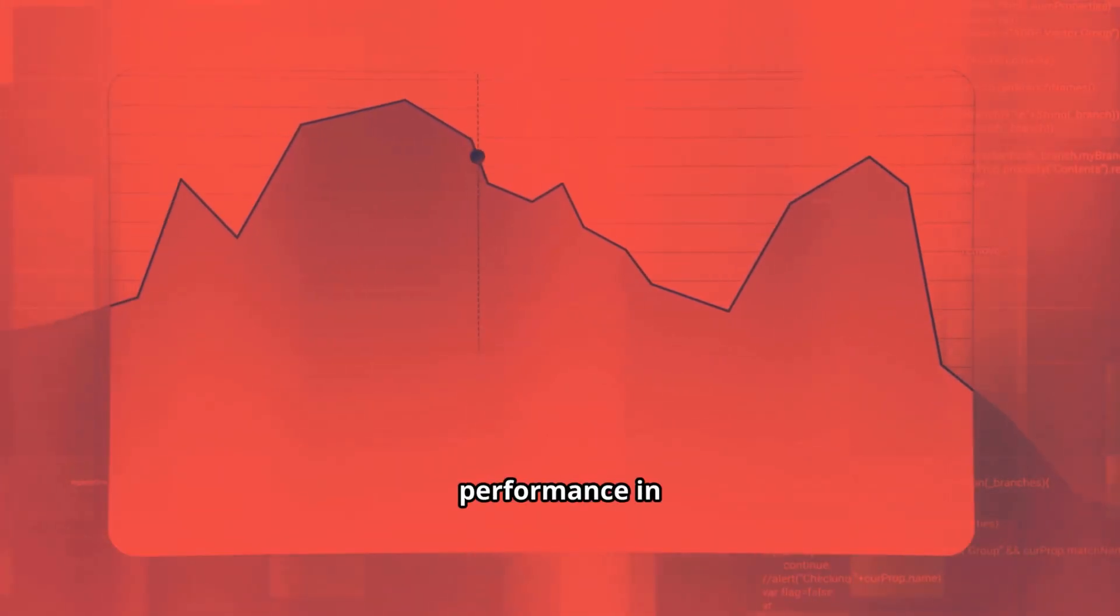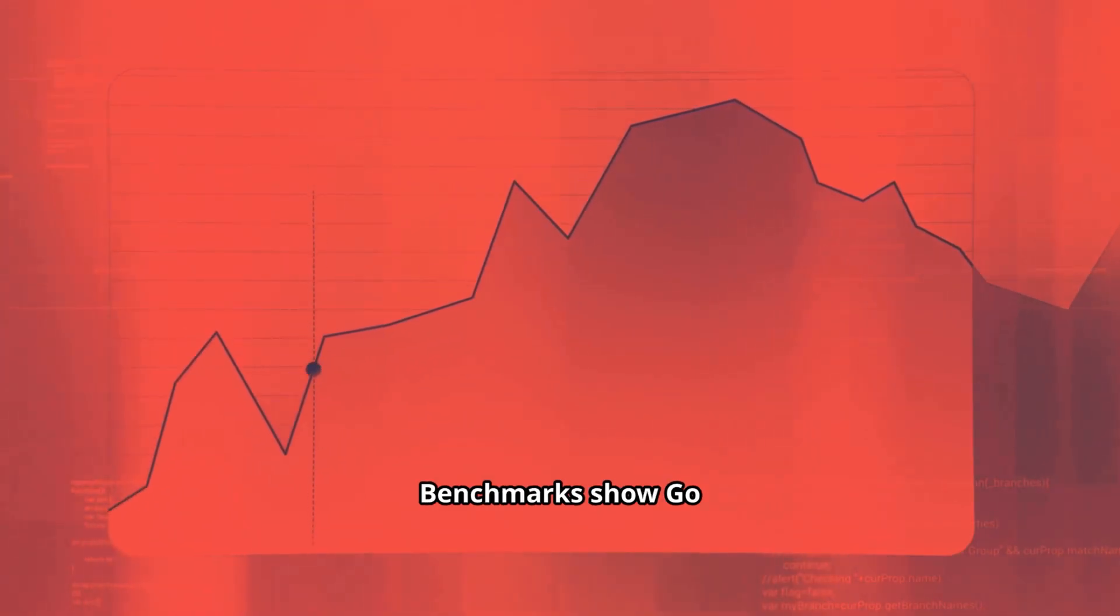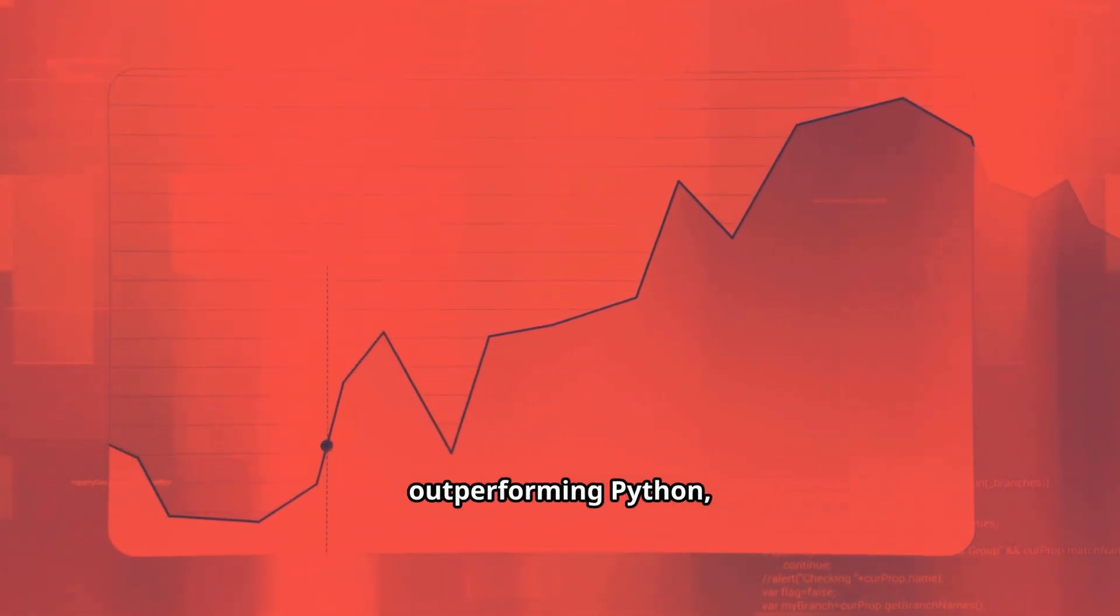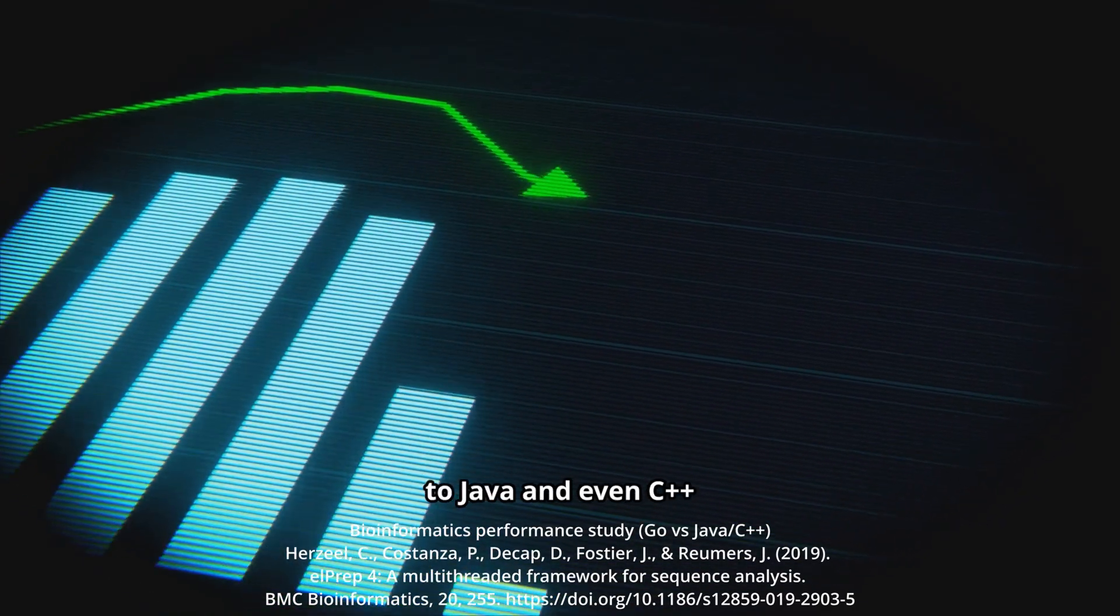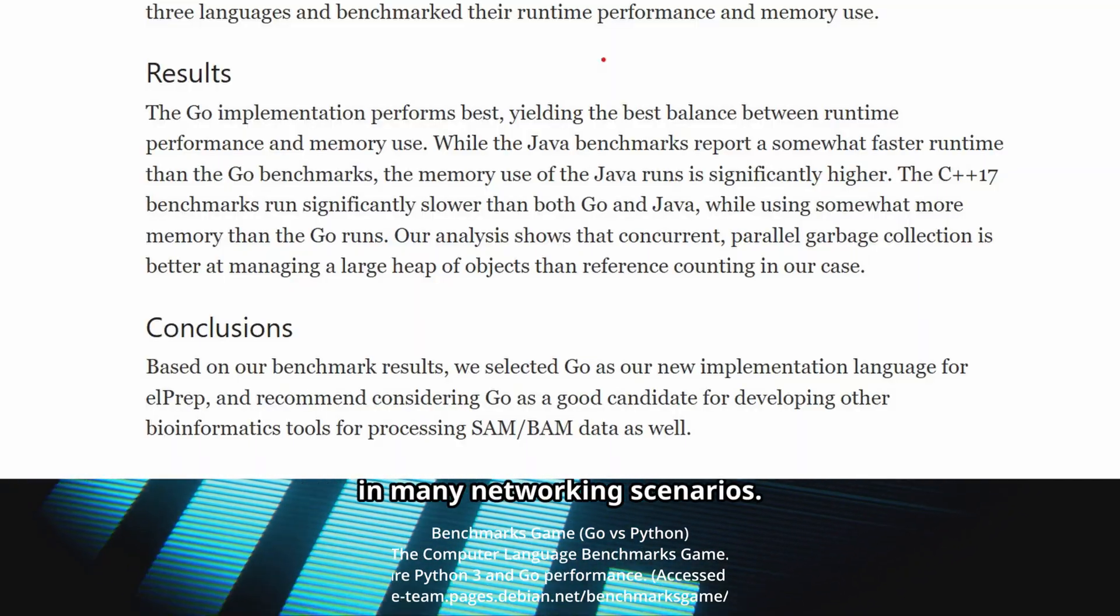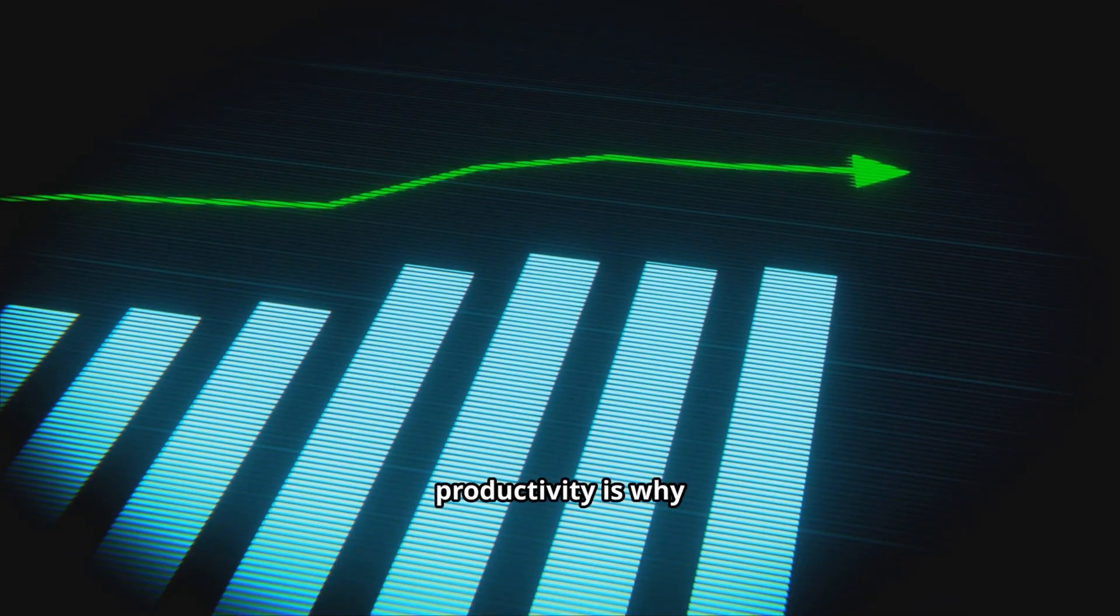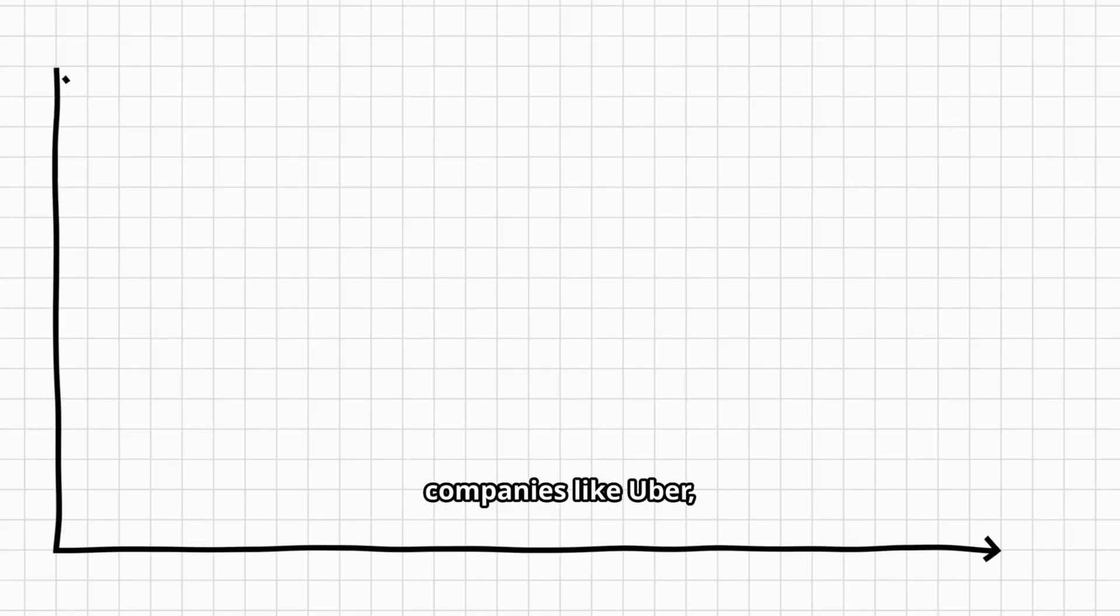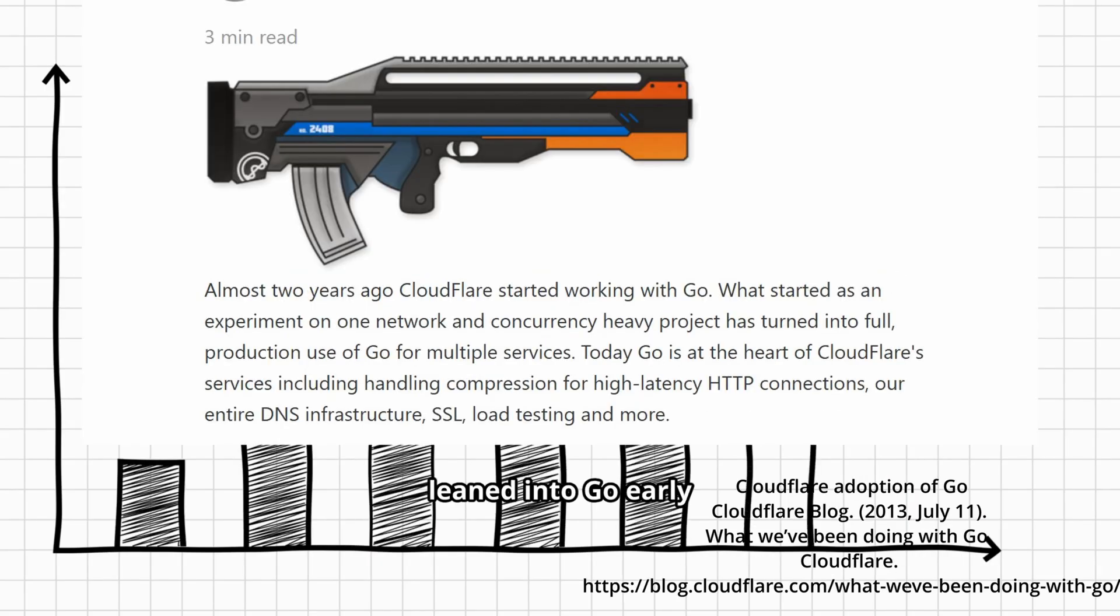Let's not forget performance in real-world workloads. Benchmarks show Go consistently outperforming Python, Ruby, and Node.js in back-end services, while coming close to Java and even C++ in many networking scenarios. That balance of speed and productivity is why companies like Uber, Dropbox, and Cloudflare leaned into Go early, and why more companies keep adopting it today.